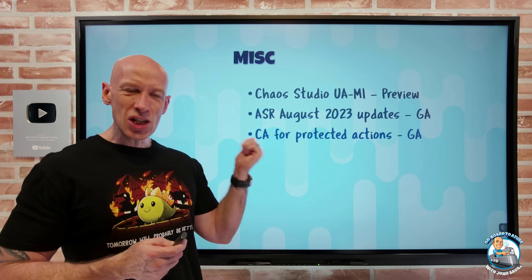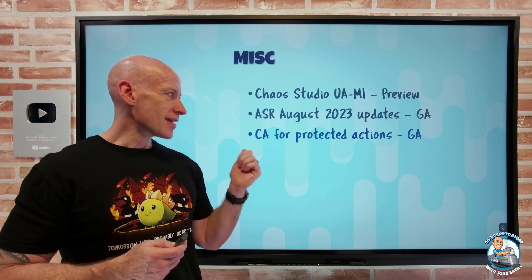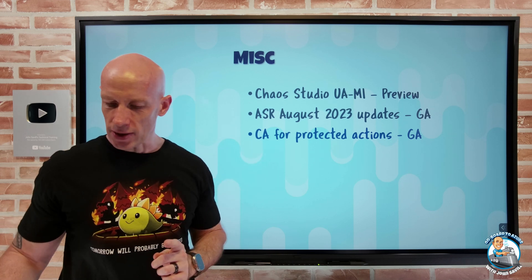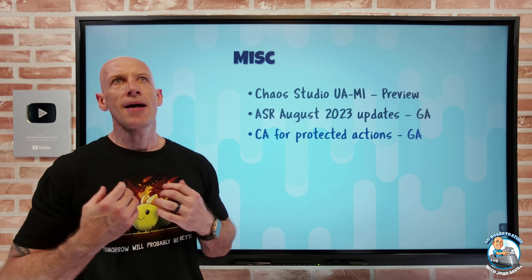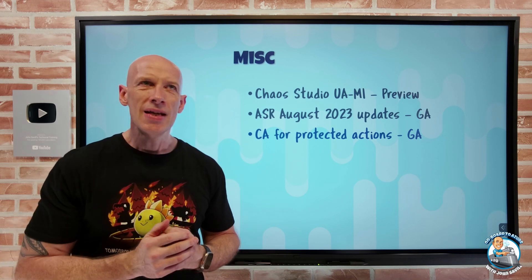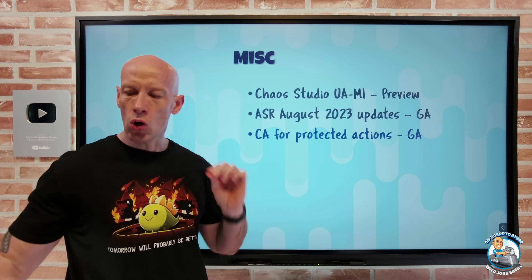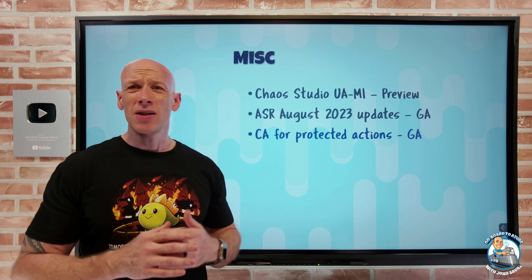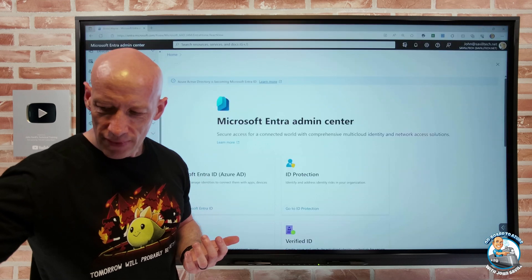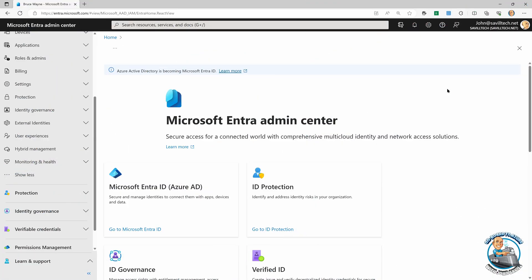There's also an interesting one: conditional access for protected actions. This is all about the idea that I'm performing some action in my tenant and I want to add additional requirements to it, really based around a custom authentication strength. It's probably easiest to show it quickly, and I'll probably do a deeper dive video. Ordinarily I'd go and look at my authentication strengths.